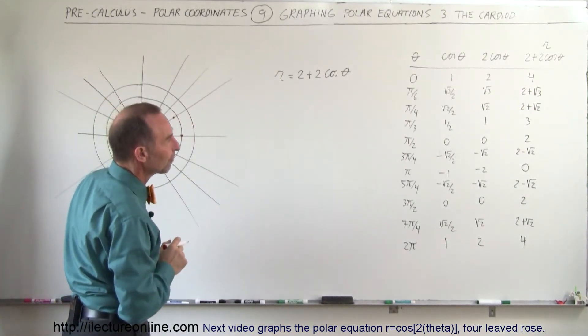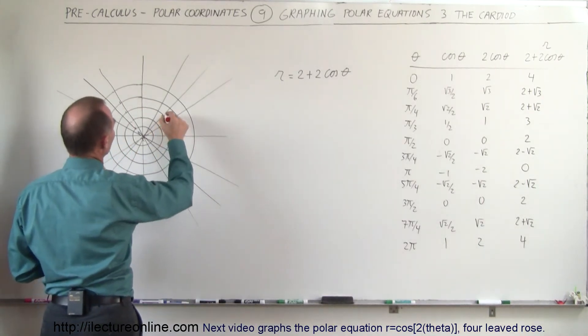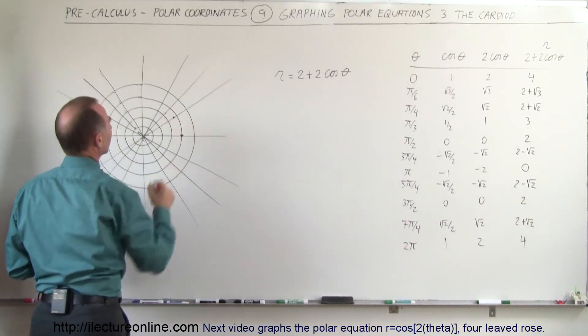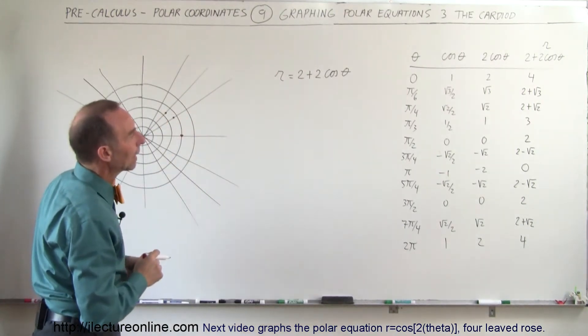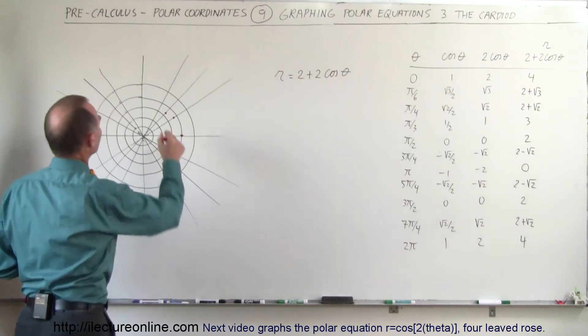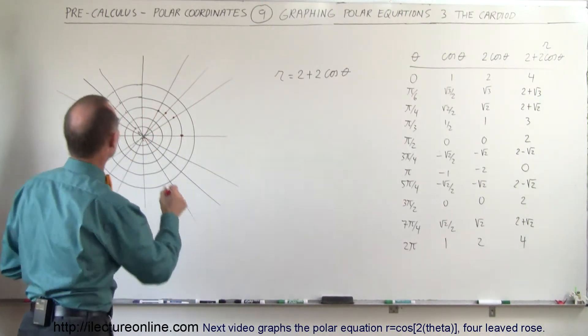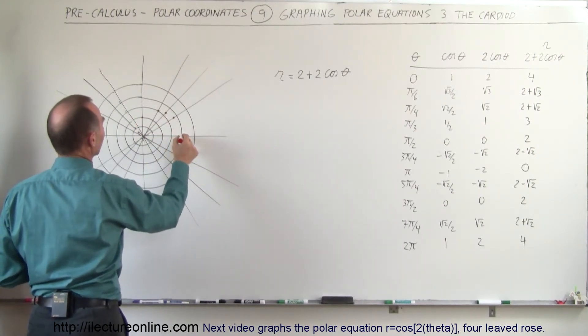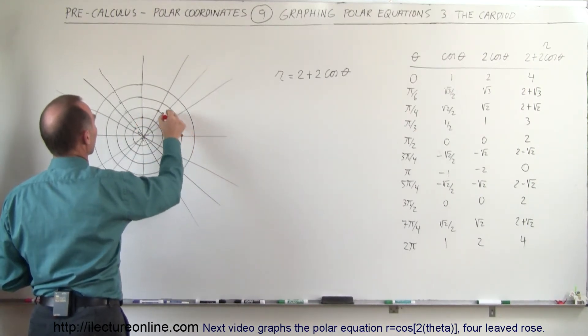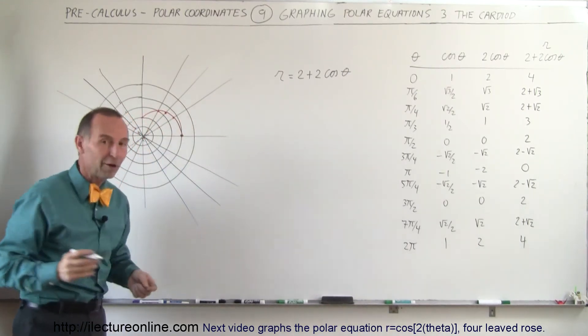At π over 4, 45 degrees, is 2 plus about 1.4, that would be 3.4. That would put us right about there. Then at π over 3, or 60 degrees, it is equal to 3. And then at 90 degrees, it's equal to 2. So you can see that we start from this location, and it becomes something like that. So that's the first 90 degrees of the graph.